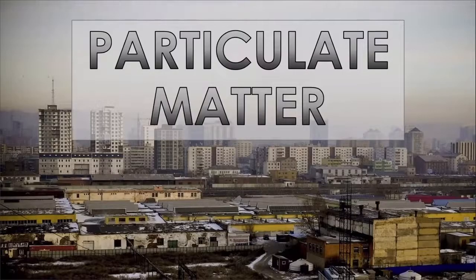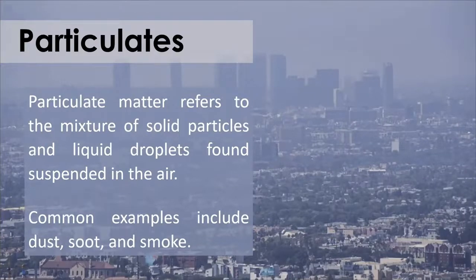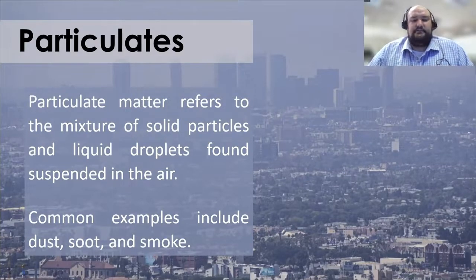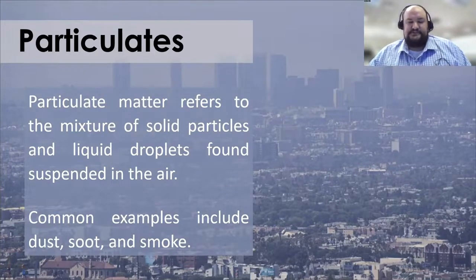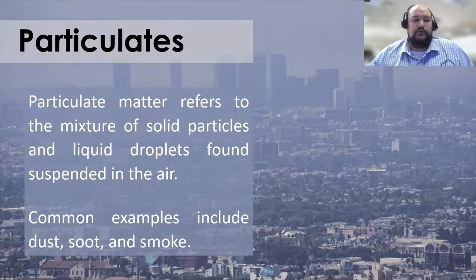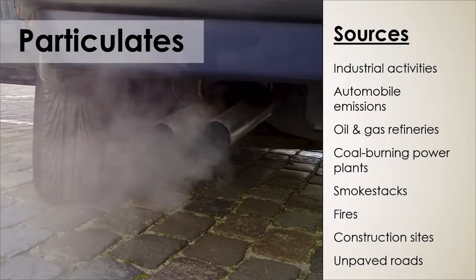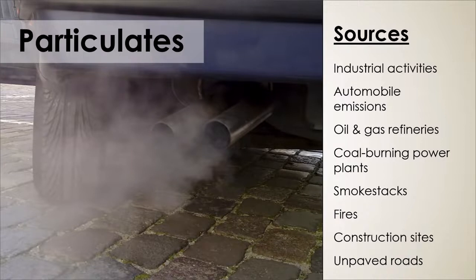We're going to start off with particulate matter. Particulates refers to the mixture of solid particles and liquid droplets found suspended in the air. Common examples include dust, soot, smoke, and a wide range of things. Many other contaminants can attach themselves to these particulates and have other impacts on air quality as well. Sources of particulates include industrial activities, automobile emissions, oil and gas refineries, coal burning power plants, smokestacks, fires, construction sites, unpaved roads, and even freshly tilled agricultural fields. Wind erosion is also a source — several years ago there was a dusty haze across North America reported to be sand from the Sahara Desert. As our environment continues to warm, we might start to see more of this wind erosion each year.